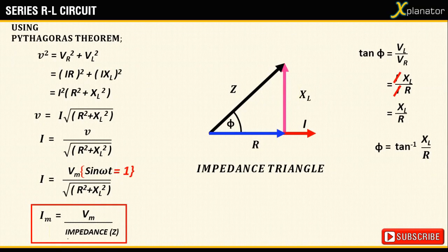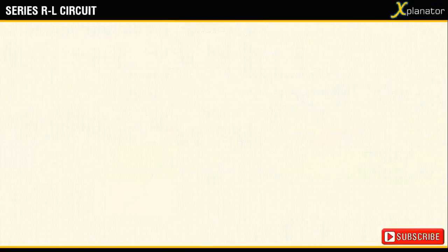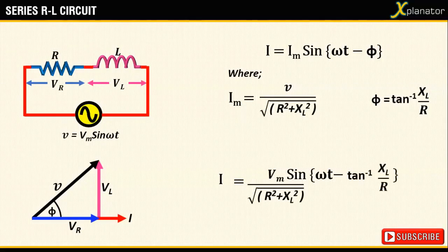So, the final value for current in a series RL circuit is given as Vm divided by root of (R squared plus xl squared) times sin (omega t minus phi).